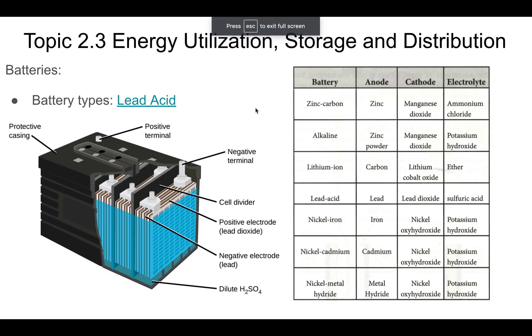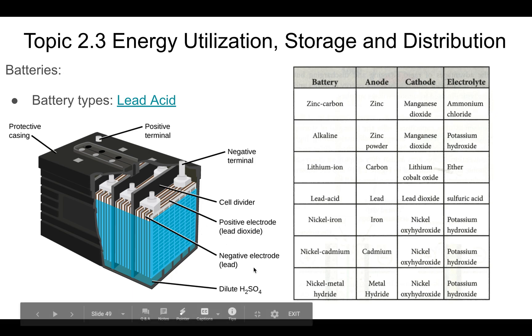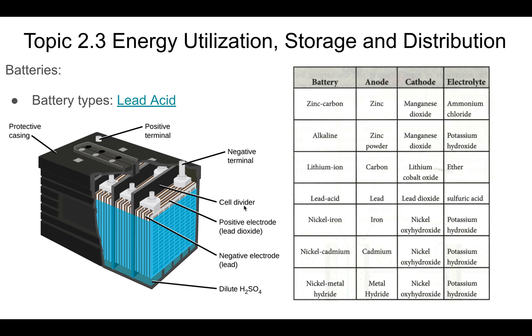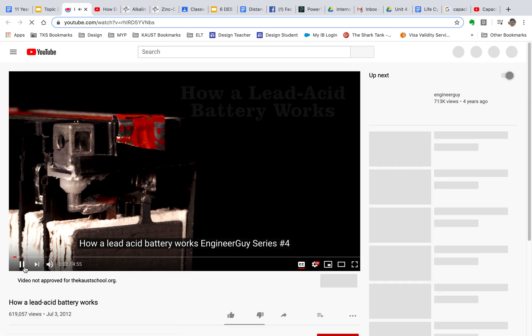Lead acid batteries are typically the ones you find in your car — in the engine. They're very rechargeable and produce a lot of voltage when you need it, which is why they're great in a car, because you need a lot of electricity to get it running. Click on this — there's a video to watch about how lead acid batteries work.